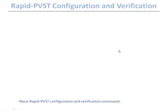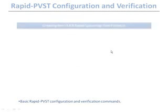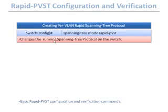To configure rapid spanning tree protocol, type the command 'spanning-tree mode rapid-PVST' in global configuration mode. This actually configures rapid per-VLAN spanning tree — meaning rapid spanning tree protocol running for every single VLAN simultaneously. It is like per-VLAN spanning tree protocol and rapid spanning tree protocol running at the same time.